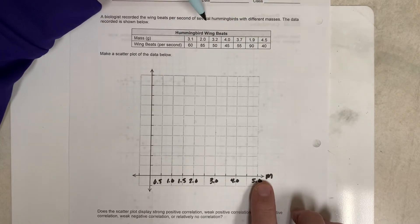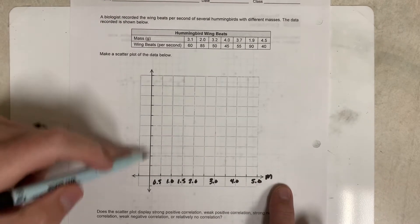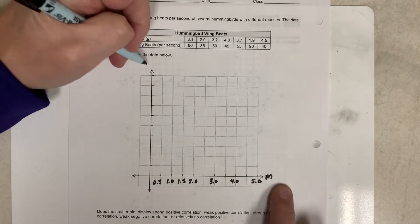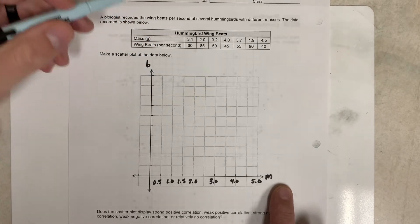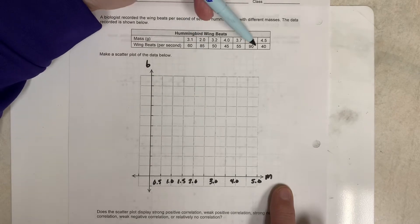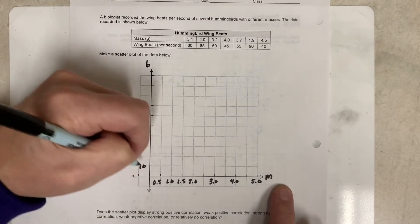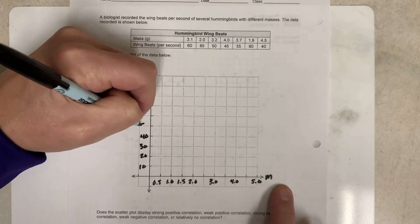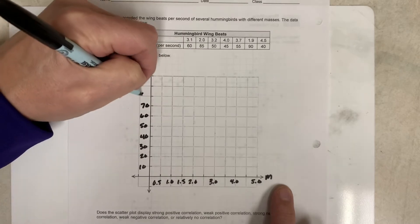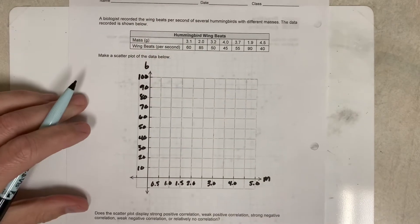For my wing beats per second, and I'll just call that B for wing beats, my biggest one there, it looks like it's 90. So if I go by 10s—10, 20, 30, 40, 50, 60, 70, 80, 90, 100—I'll definitely be able to fit my biggest one of 90 on there. Okay, so now we're going to go ahead and plot all the dots for the scatter plot.